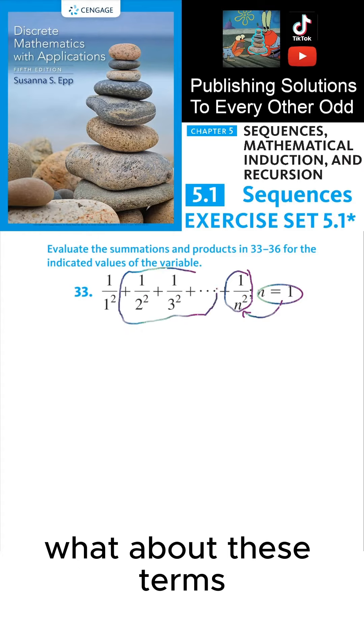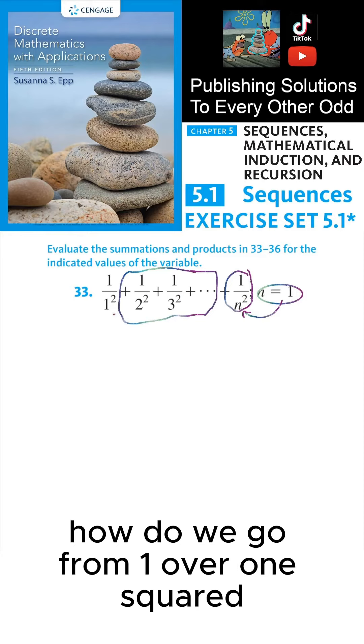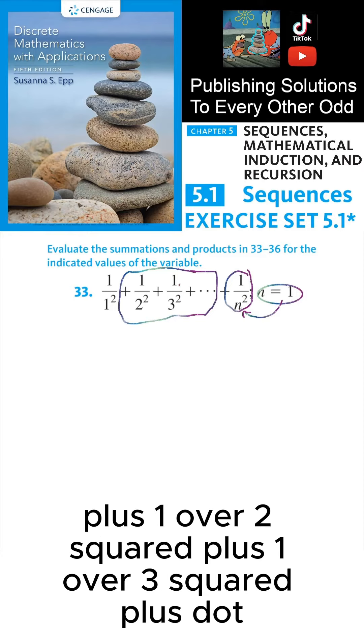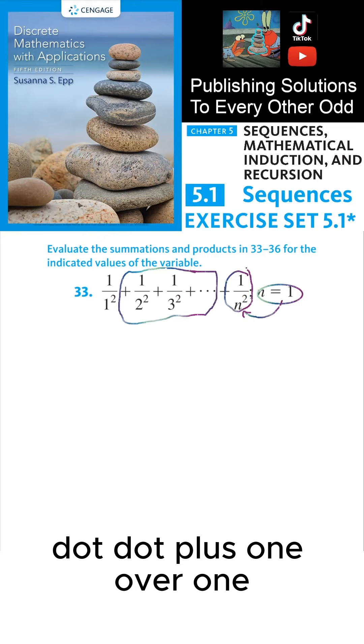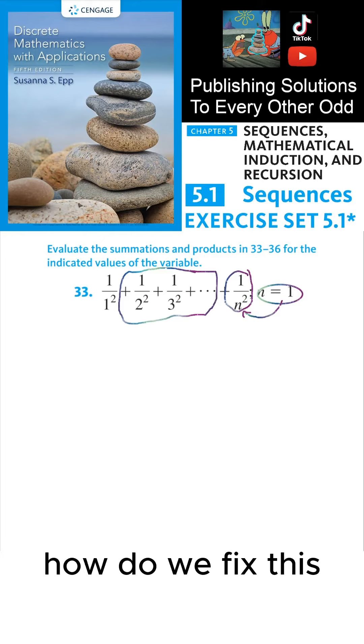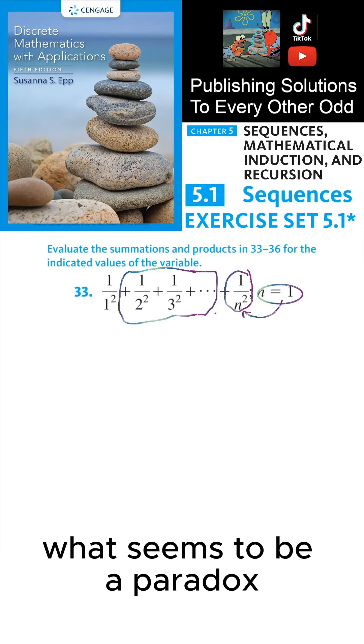Which begs the question, what about these terms? How do we go from 1 over 1 squared plus 1 over 2 squared plus 1 over 3 squared plus dot dot dot plus 1 over 1? How do we fix this, what seems to be a paradox?